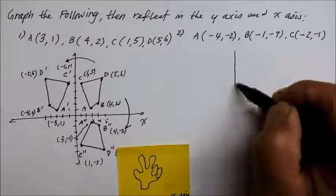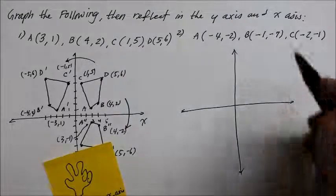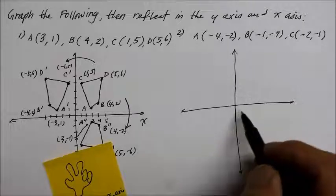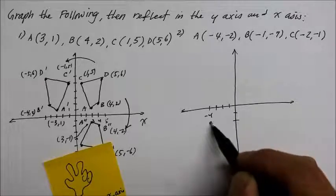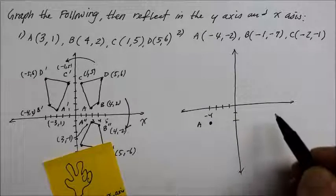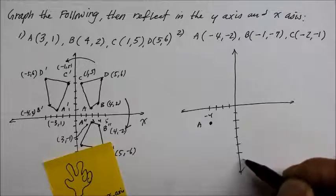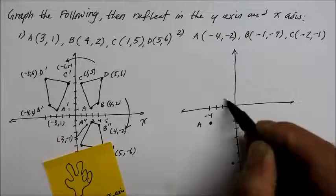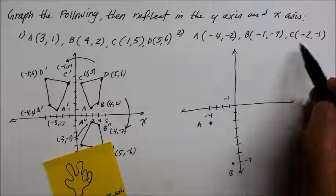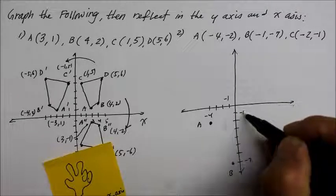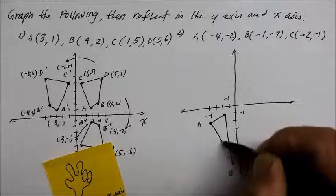Let's plot those points on the coordinate plane. The first coordinate, A, is at (−4, −2). The second point, B, is at (−1, −7). And C is at (−2, −1). Connect all the points together, and it becomes a triangle — looks almost like an isosceles.